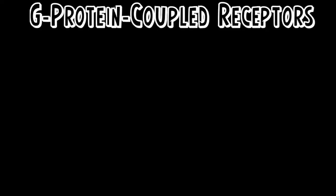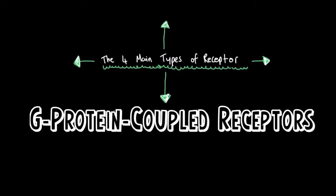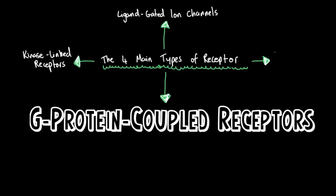G-protein-coupled receptors are one of the four main types of receptor, with the others being ligand-gated ion channels, kinase-linked receptors, and nuclear receptors.